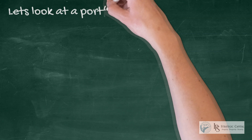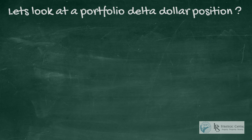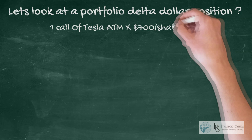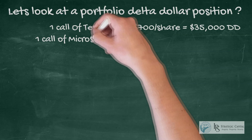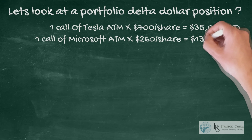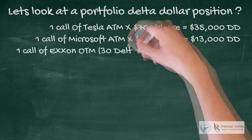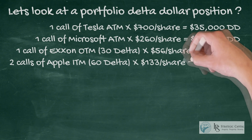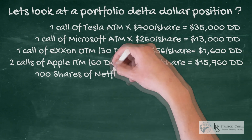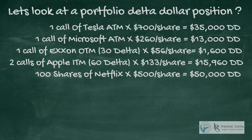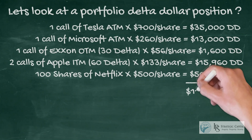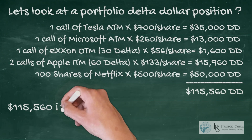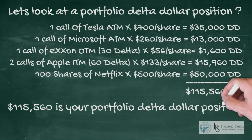So let's look at a portfolio of different options in stocks. Let's say you own one call on Tesla at the money at $700 a share, one call on Microsoft at the money at $260 a share, one call on Exxon out of the money at $56 a share, two calls on Apple in the money at $133 a share, and 100 shares of Netflix at $500 a share. You would actually have $115,560 Delta dollars.